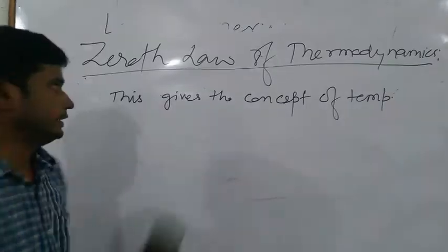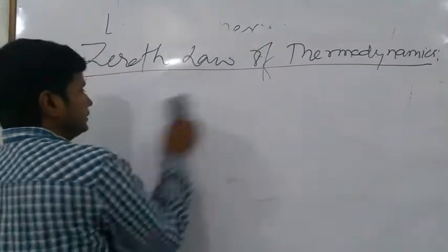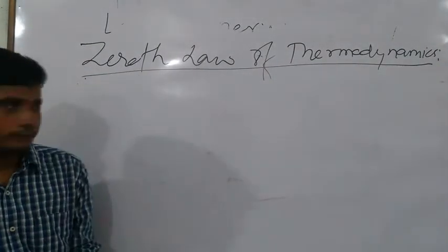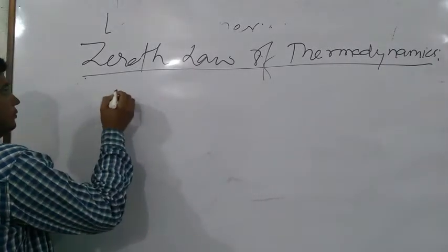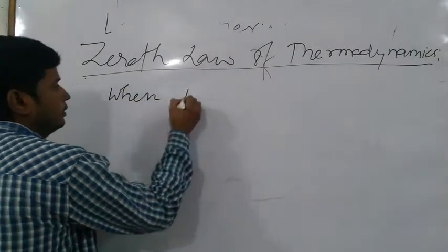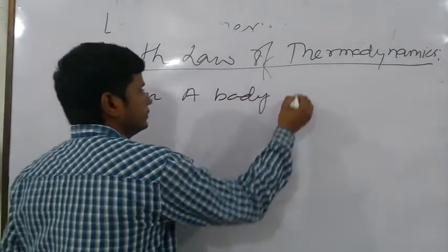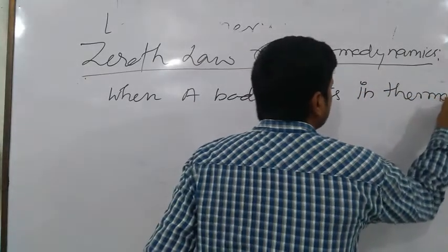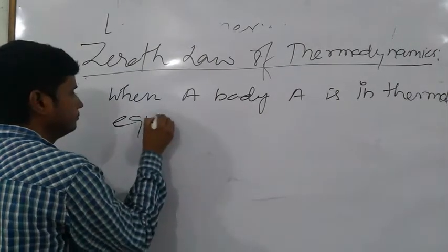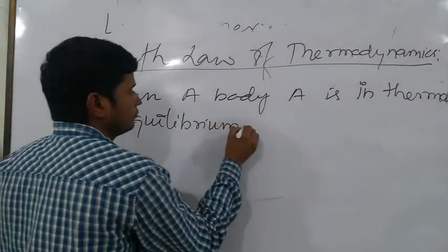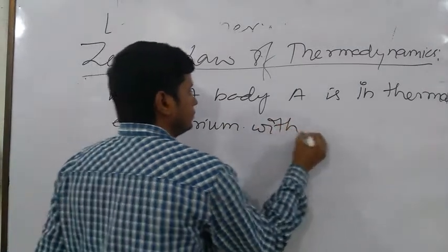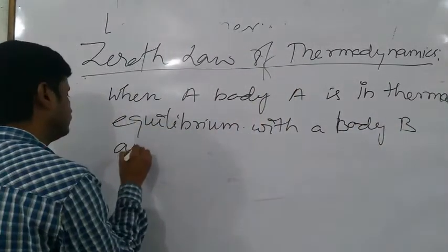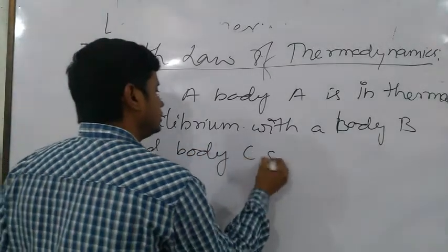Let us say the statement of the Zeroth law of thermodynamics. The statement is: when a body A is in thermal equilibrium with a body B, and body C separately,